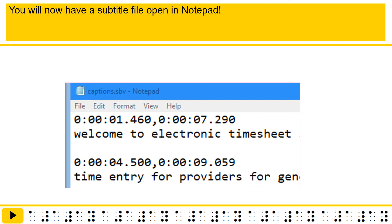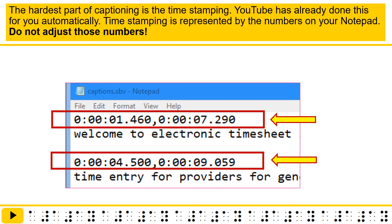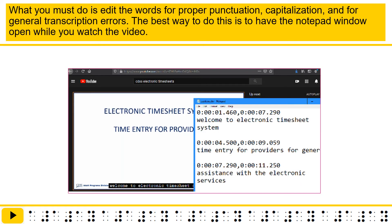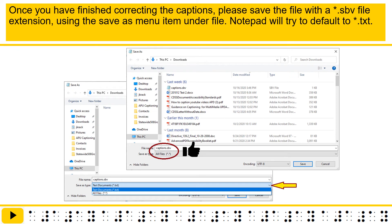You will now have a subtitle file open in Notepad. The hardest part of captioning is the timestamping — YouTube has already done this for you automatically. Timestamping is represented by the numbers in your Notepad. Do not adjust those numbers. What you must do is edit the words for proper punctuation, capitalization, and for general transcription errors. The best way to do this is to have the Notepad window open while you watch the video. Once you have finished correcting the captions, please save the file with a .SPV file extension using the Save As menu item under File. Notepad will try to default to .TXT.